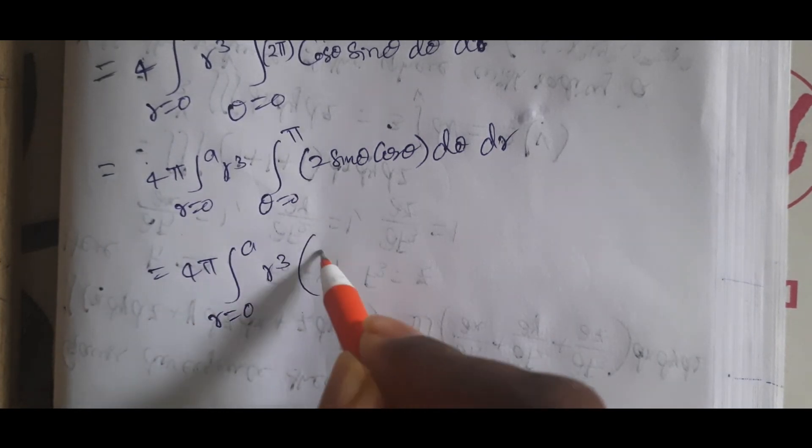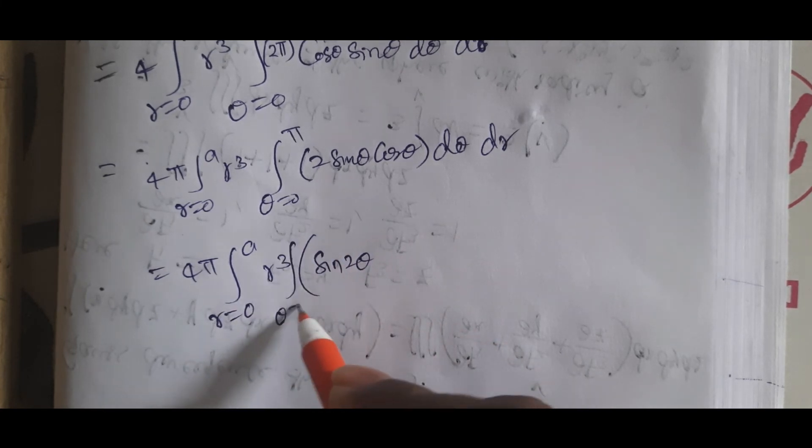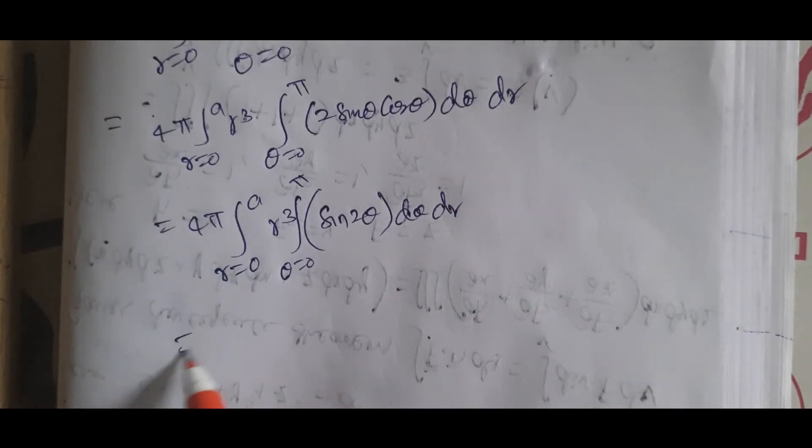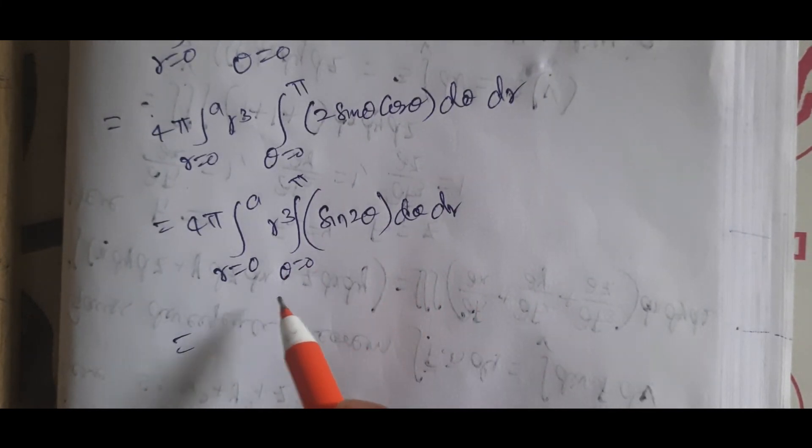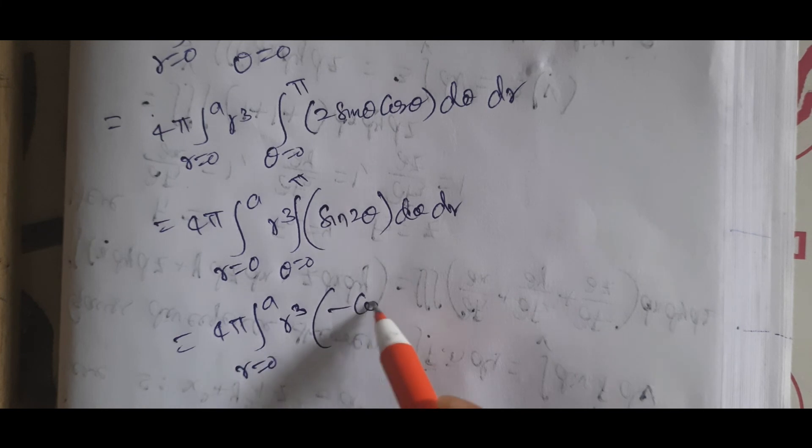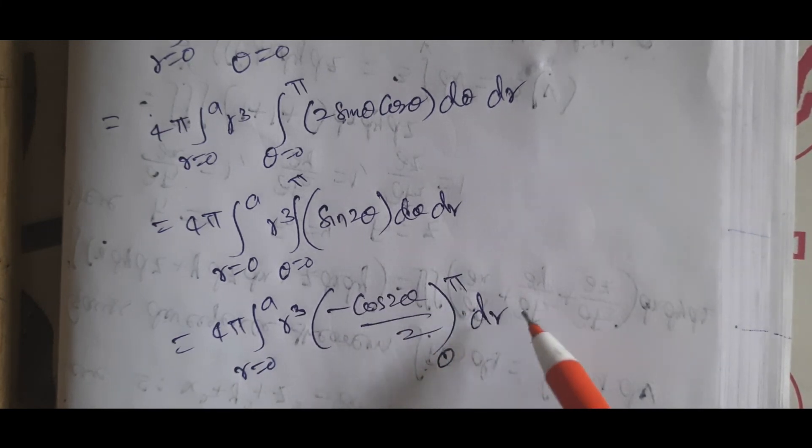4π integral r = 0 to a, R³, sine 2theta, integral theta = 0 to pi dtheta dr. Integral sin 2theta equals minus cos 2theta by 2. 4π into r = 0 to a, R³, minus cos 2theta by 2, zero to pi, dr.